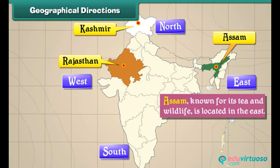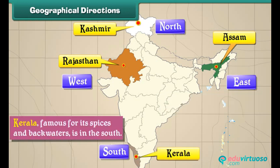Assam, known for its tea and wildlife, is located in the east. Kerala, famous for its spices and backwaters, is in the south.